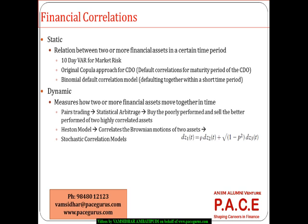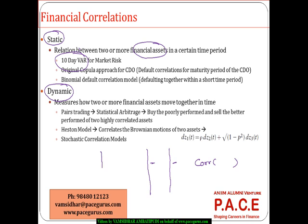Whenever we use the word correlation, it gets defined either as a static or as a dynamic concept. When I say static, I take one data set and another data set, and at one particular point I try to find out what kind of linear relationship is present between them — the relationship between two or more financial assets at a particular point in time. I am computing that number, and once computed, it is the value associated with the correlation; it is not changing with time.